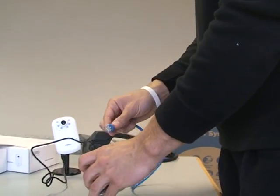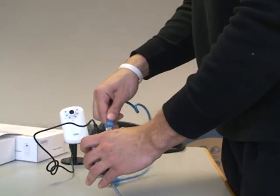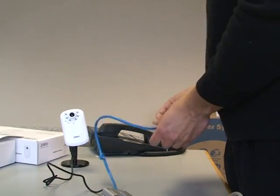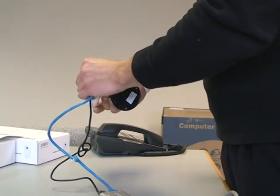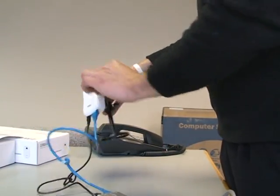Then you take your other Ethernet cable, you take the LAN out. This is all on the terminal unit. And then you attach it to the Ethernet LAN port on your IP camera.